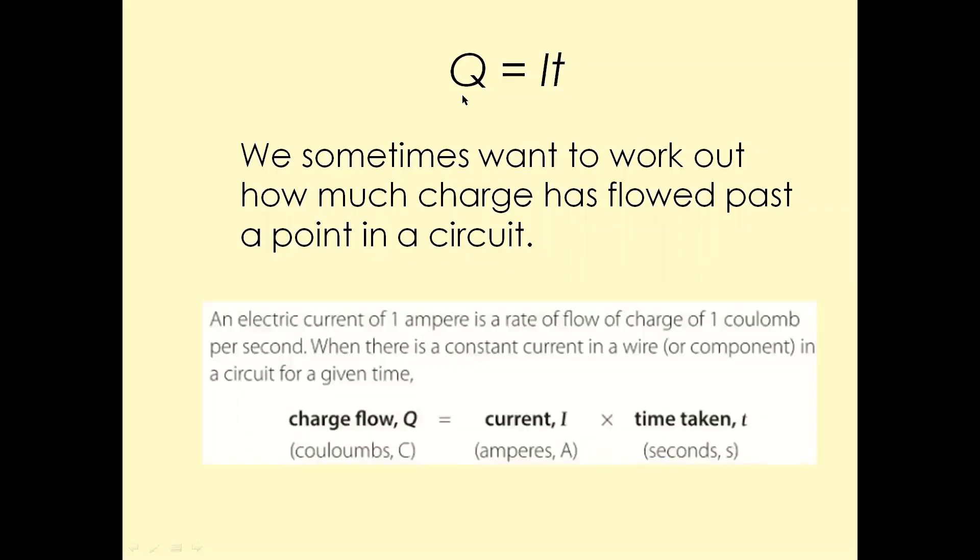Just have a look at the relationship between the charge and current. The symbol for charge is Q and we measure charge in Coulombs. So charge symbol is Q, measured in Coulombs. I is a symbol for current, measured in amps, and T is the time.